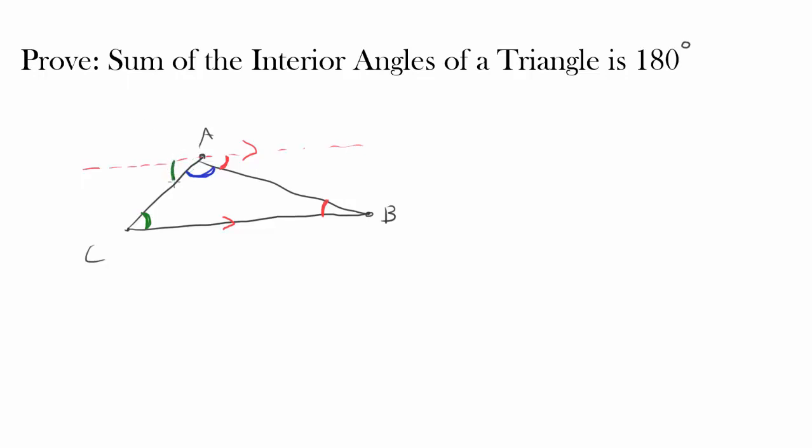So this angle is the same as this one. We have our first angle, our second angle, and our third angle making a straight line, and a straight line has an angle measure of 180 degrees by definition.